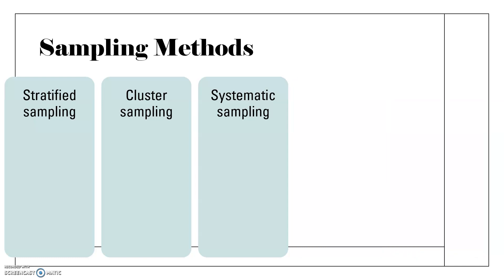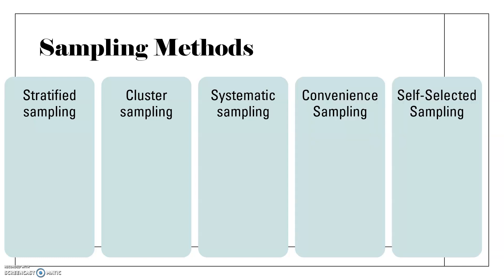Convenience sampling and self-selected sampling are considered pretty biased methods, so if you're using these two you want to be very aware of the possibility of adding bias to your sample. For stratified sampling, you divide your population into groups with similar characteristics.